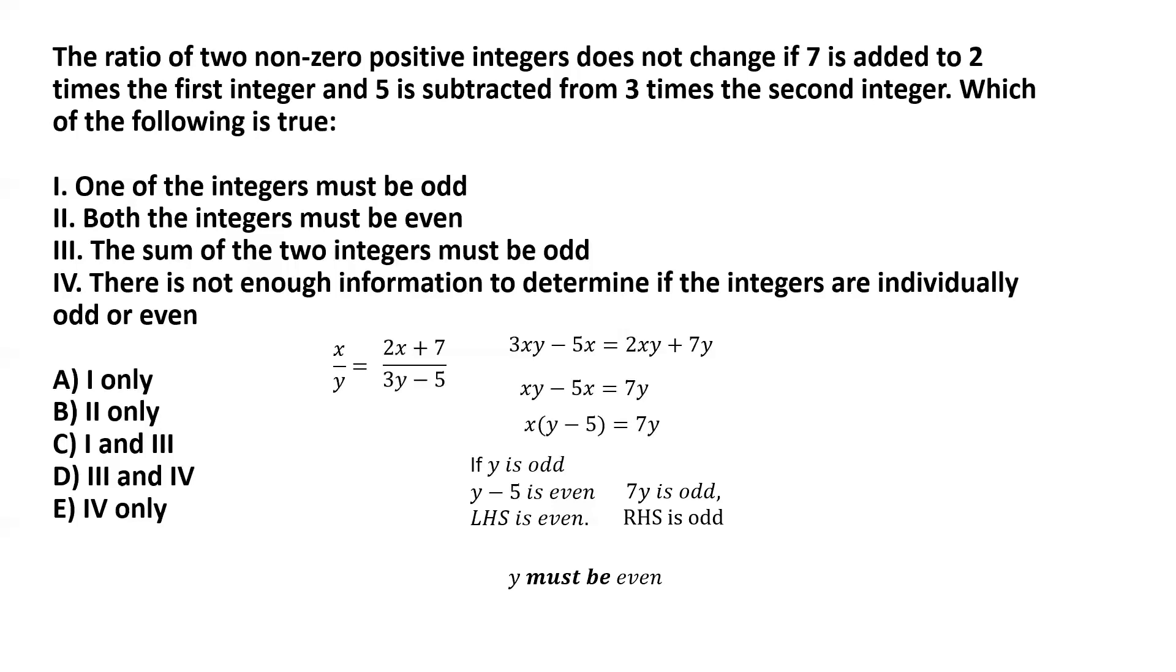Similarly, we can write the equation as xy minus 7y equals 5x, taking y common to get y multiplied by x minus 7 equals 5x. If we assume x is odd, then x minus 7 is even by the same logic, which makes the left hand side even. But the right hand side, being a product of two odd numbers, will be odd. Again we have a contradiction, suggesting that x cannot be odd. If x cannot be odd, x must also be even.